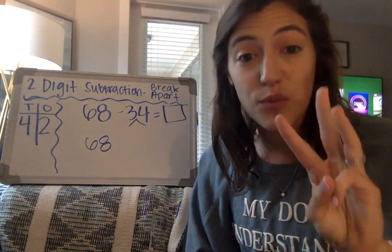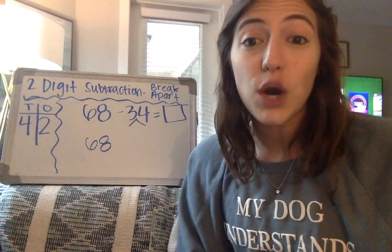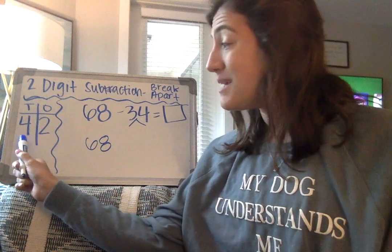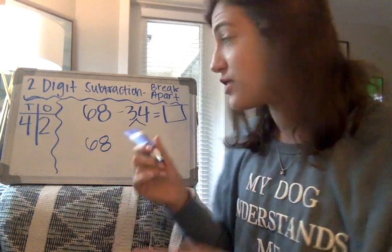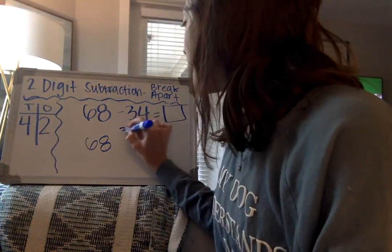So I see that there is a 3 in the tens place. I know it's not just a 3. I know that because it's in the tens place, it's worth 30. So I'm going to write 30 right here.